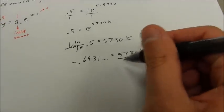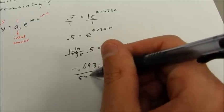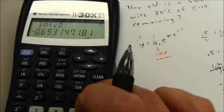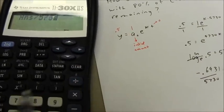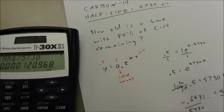And then, of course, I can just divide both sides by 5,730. And it gives me the decimal value. That's my k value.